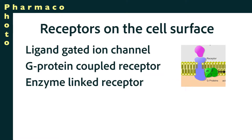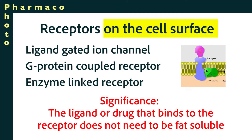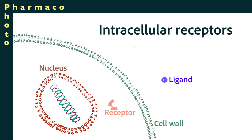Those are the three types of membrane-bound receptors. The ligands that affect those receptors can access the receptor from the outside of the cell, meaning the ligand or drug can be water-soluble or lipid-soluble. However, the ligands for the intracellular receptor need to be lipid or fat-soluble in order to get through the phospholipid bilayer.